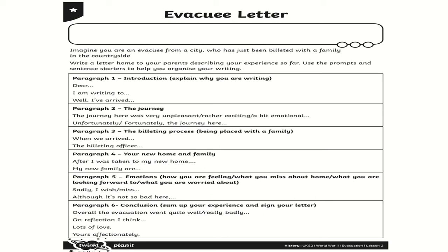In paragraph two, you're going to describe your journey there. We've got to chapter six in Letters from the Lighthouse and we've already had some descriptions of the train journey that Olive and Cliff took to get to Budmouth Point. Perhaps it was a very exciting journey — maybe you were looking out of the window at the trees, forests, and rivers, or maybe you saw animals in a field. Maybe you had a very unpleasant journey because the train was crowded, or like Esther Jenkins in the book, a child there wasn't very nice to you and stole your things.